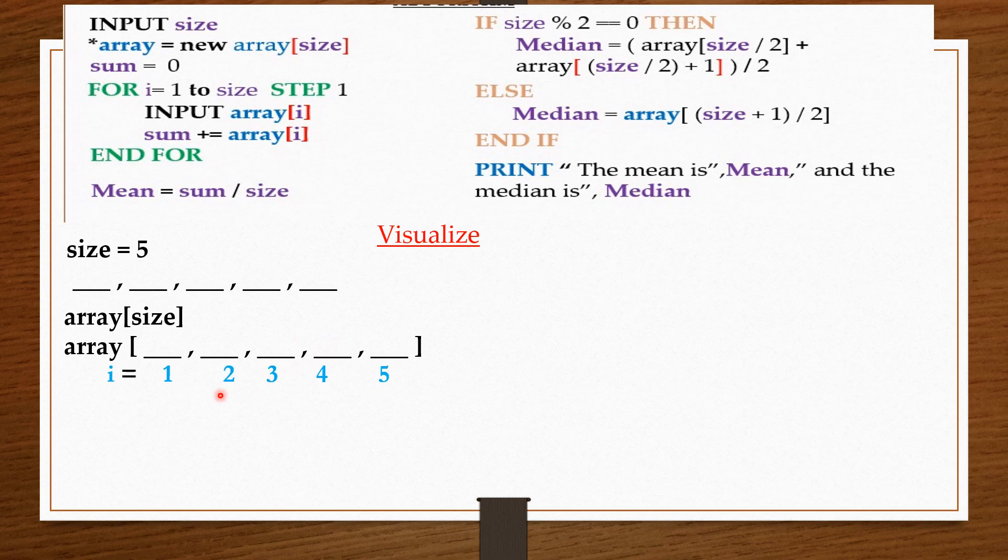We fill in arbitrary numbers: 6, 5, 4, 3, 2. And each time the user entered a number in the array, we added and stored that number in sum. With this, we found our mean.